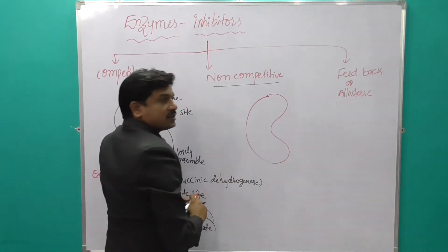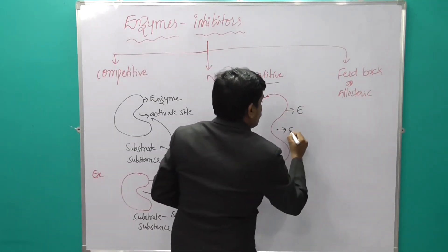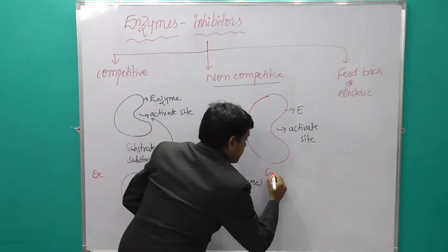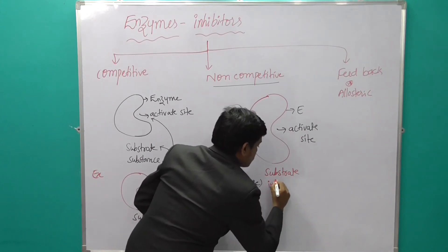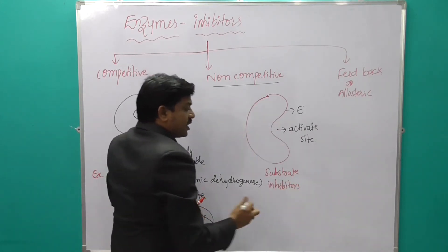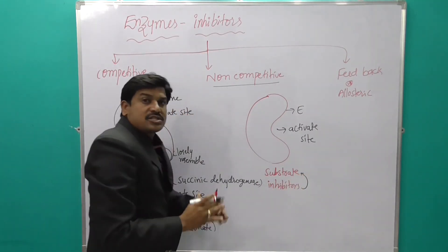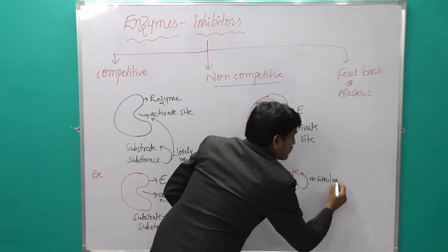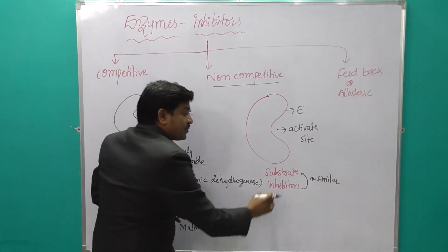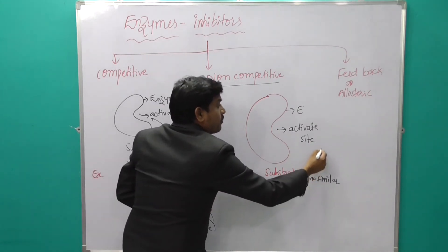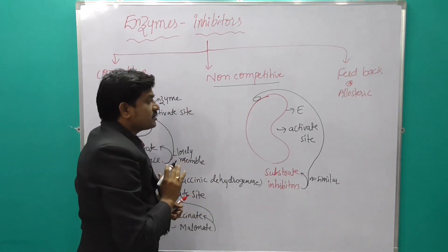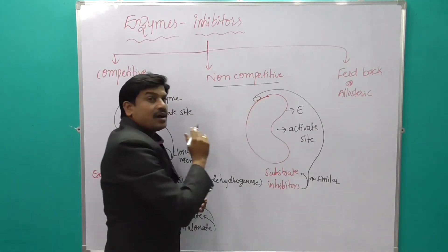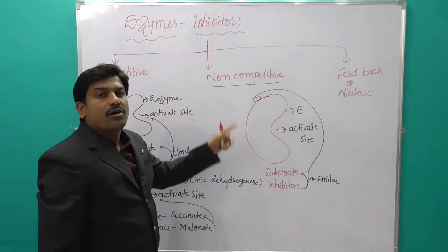For understanding non-competitive inhibitors, I am drawing a diagram showing an enzyme with an active site. Here, the substrate is present, but the inhibitor has no similar structure to the substrate. The inhibitor with no similar structure to the substrate binds to the enzyme at a location other than the active site.